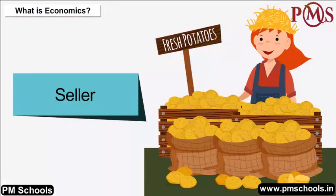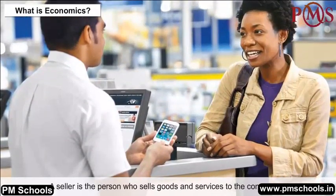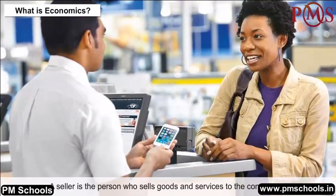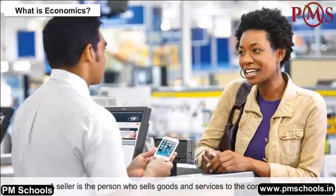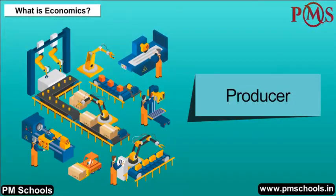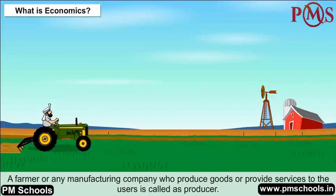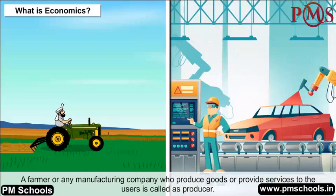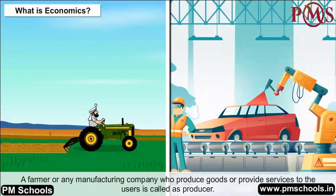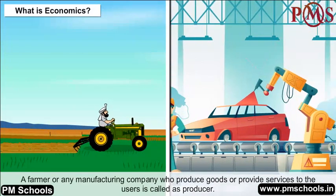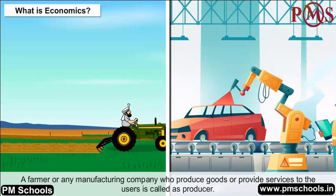A seller is the person who sells goods and services to the consumers. A farmer or any manufacturing company who produces goods or provides services to the users is called a producer.